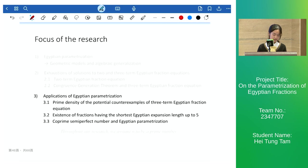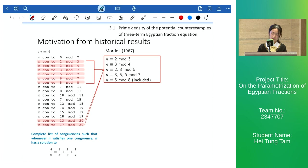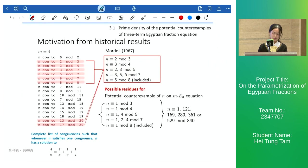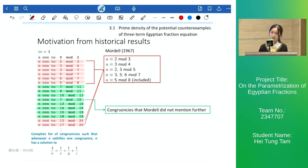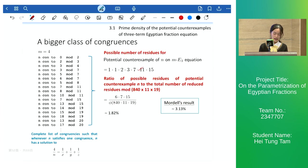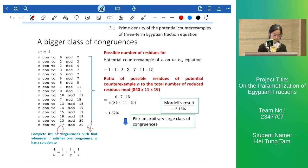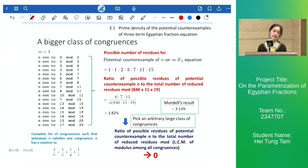I will now move on to the application of our parameterization. Modell proposed a list of congruences such that whenever n satisfies any of them, n has a solution to the mE3 equation when m equals 4, which is the Erdős-Straus conjecture. The possible residues of potential counterexamples are as shown, and the ratio of escaped residues to total reduced residues is around 3%. The green highlighted congruences are ones he did not mention further. If we extend our congruences up to mod 20, the total number of reduced residues and escaped residues both increase, but the increased rate for escaped residues is lower than that for total reduced residues. Therefore the ratio decreases to around 1.8%, giving evidence that if we extend the congruence list to infinity and choose a bigger class of congruences, the ratio will eventually tend to zero.